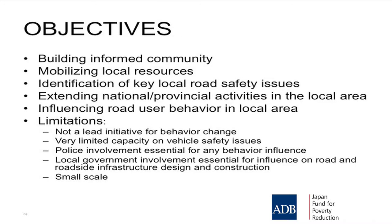All of those are appropriate objectives for community road safety. Before I move off objectives, I need to talk about limitations. Local government or the authority responsible for roadside furniture — signs, kerbs, channelling, footpaths — needs to be part of a community program. Because inevitably, whatever you do, you will find that you need to put up a sign or put in a crossing for pedestrians. The authority responsible for those things needs to be part of the program, and this may differ in each country.